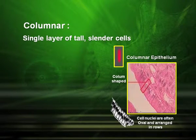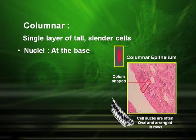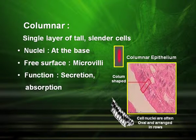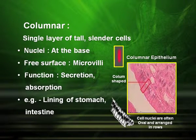Columnar epithelial tissue is made up of a single layer of slender cells. The nuclei are found at the base and the free surface has structures called microvilli. These columnar-shaped cells function in secretion and absorption and are found in the lining of the stomach and intestine.